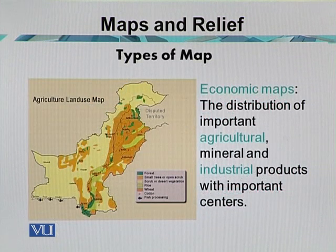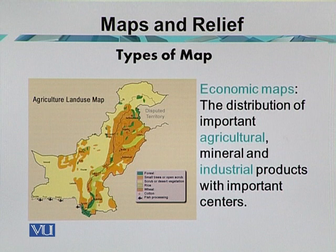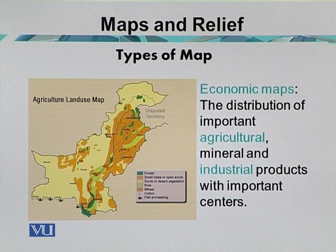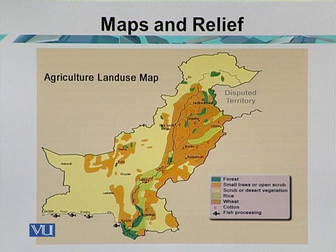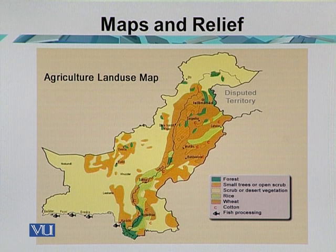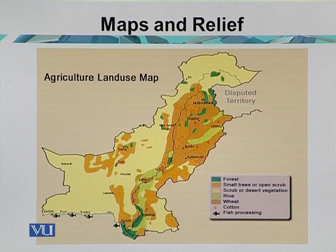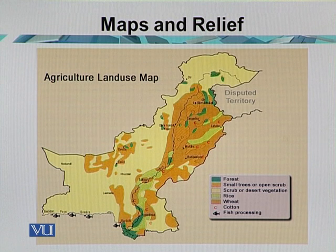Some maps are made for economic purposes and are called economic maps. They show the distribution of important agricultural, mineral, and industrial products with important centers. Here we have the example of Pakistan, where the map shows the agricultural land use areas of the country. Most of the area is covered in yellow, representing desert-type vegetation and shrubs, while the brown color shows the most important agricultural land, called the Indus Plain.